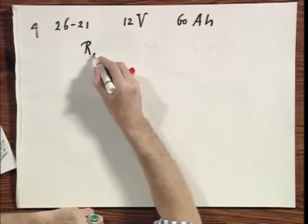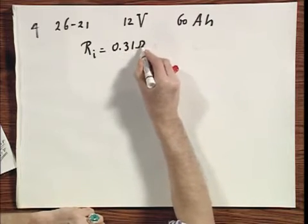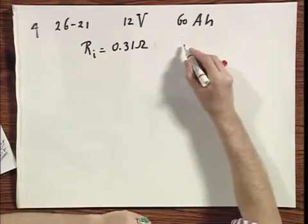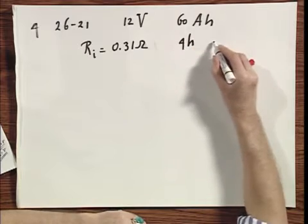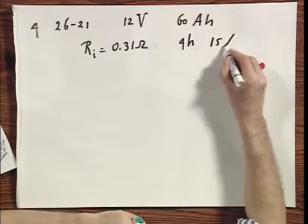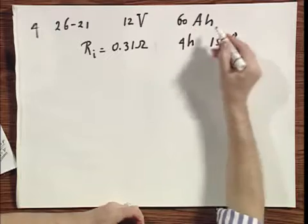It has an internal resistance of 0.31 ohm and it takes four hours to charge it at fifteen amps. It's given. It will get you sixty amp hours.